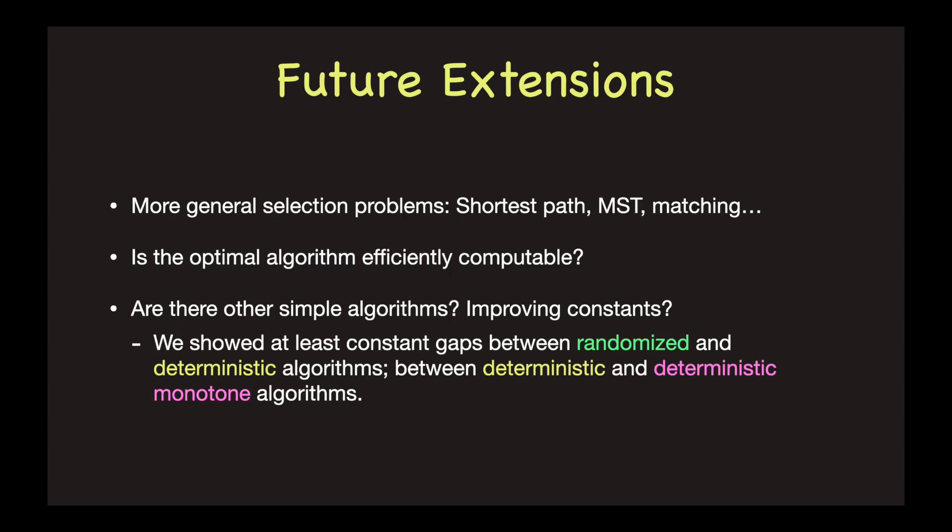For example, the shortest path extension of our setting can model someone's decision to select the fastest way to go home, fastest in the sense that she wants to minimize her regret of travel time.